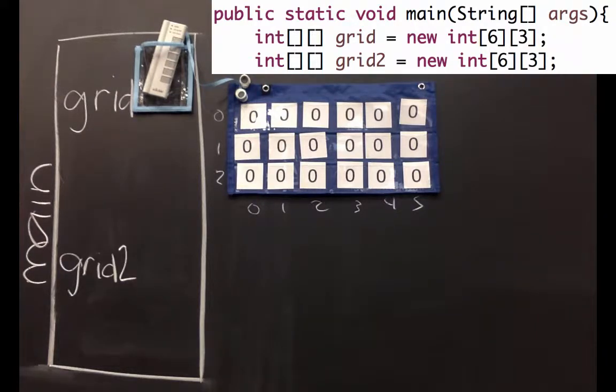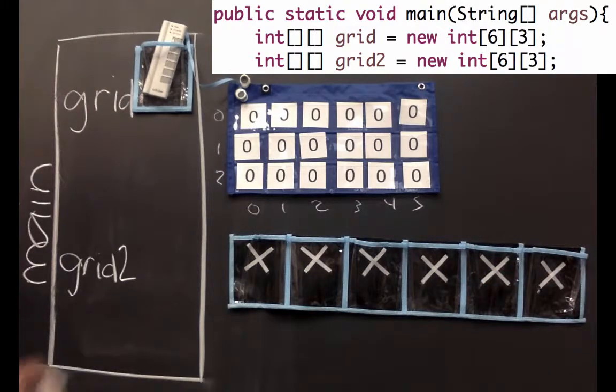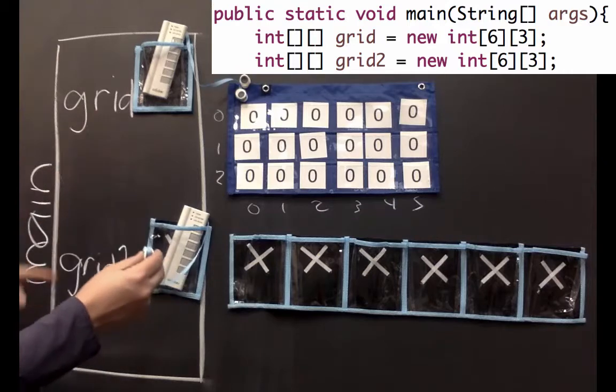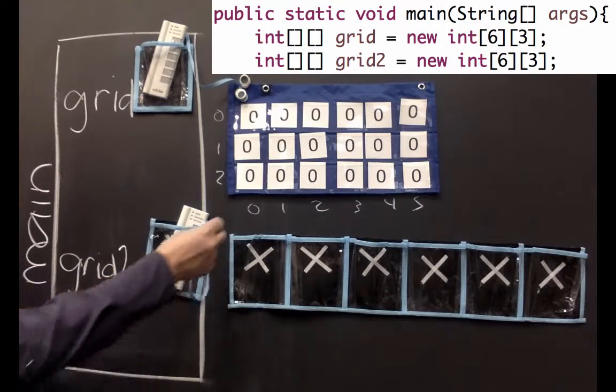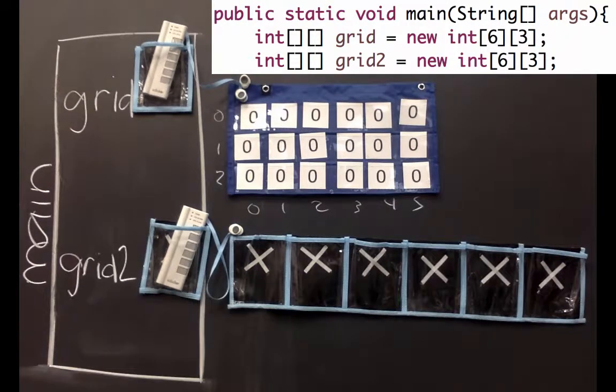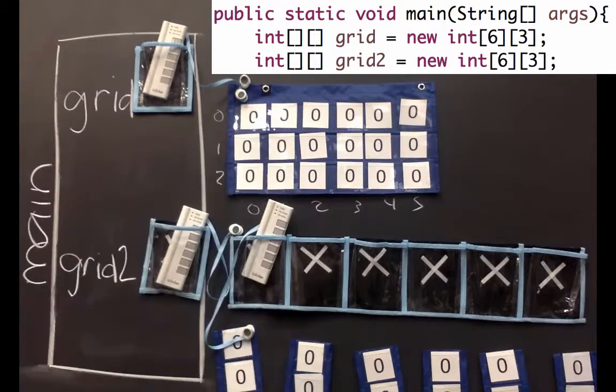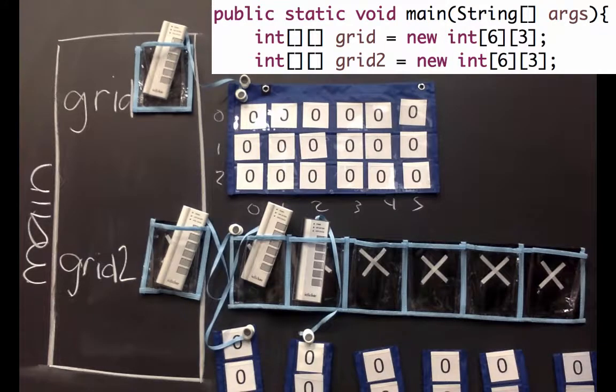But actually we've got references in there to see how this is actually represented. So grid2 is going to be the same thing, it's a new int array that's 6 by 3. That means that the core grid2 and actually grid is a reference to an array of variables that can all reference an int array. So actually each one of these is going to reference a separate three element int array. And here I'll make them vertical. Sorry, I have to use a mix of blues and whites.